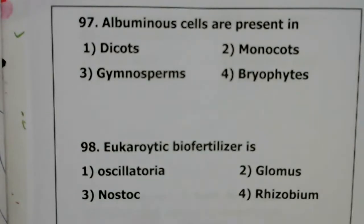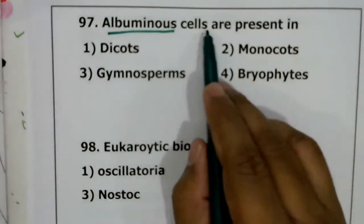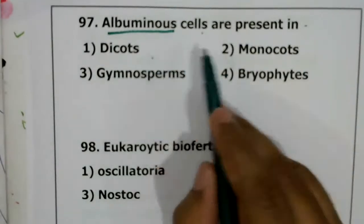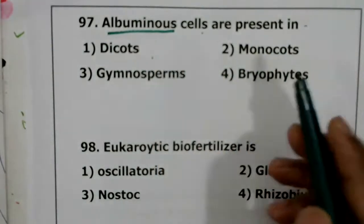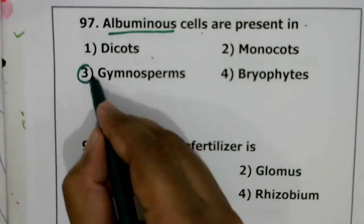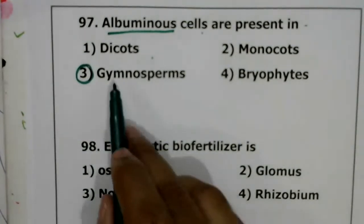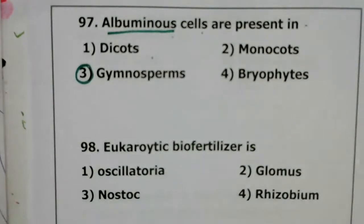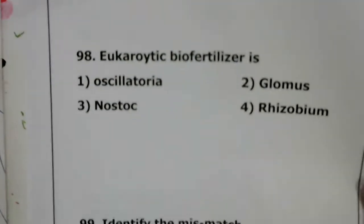Question 97: albuminous cells are present in dicots, monocots, gymnosperms, or bryophytes? The correct answer is gymnosperms. In gymnosperms there are no companion cells; instead they have albuminous cells. Question 97, correct answer is the third option.